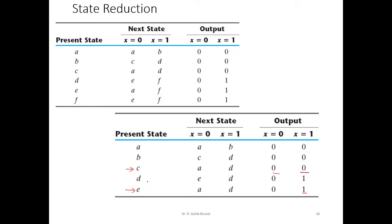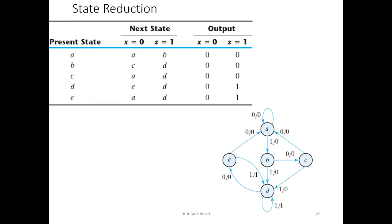Why should we do this? Because if we have many states, the state information decides the number of flip-flops that we will need to implement the circuit. If the number of states is more, we will need more hardware to implement. That is why we reduce the number of states, arriving at the minimal number of states required to implement the circuit. This is the state diagram equivalent to the reduced state table, which has only 5 states.